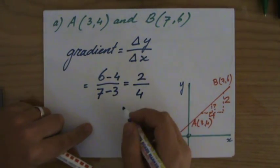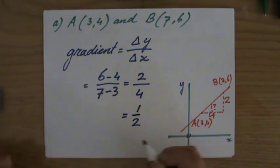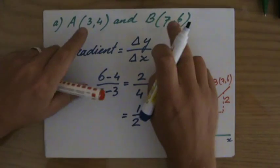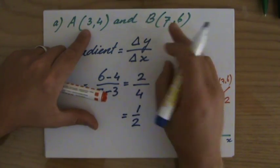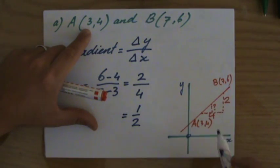Fantastic. We always have to simplify that. Take out the common factor. So the answer is one-half. So apparently the line going through these two points, if it goes one step to the right, it goes half a step up.